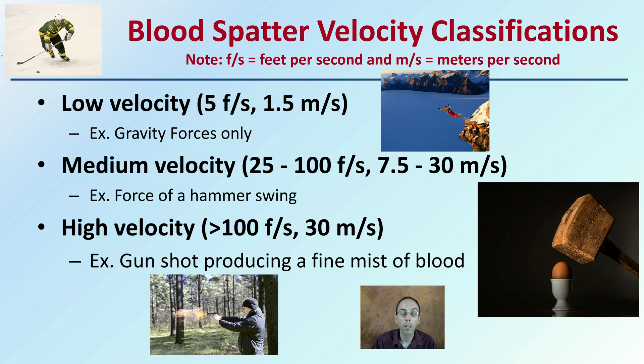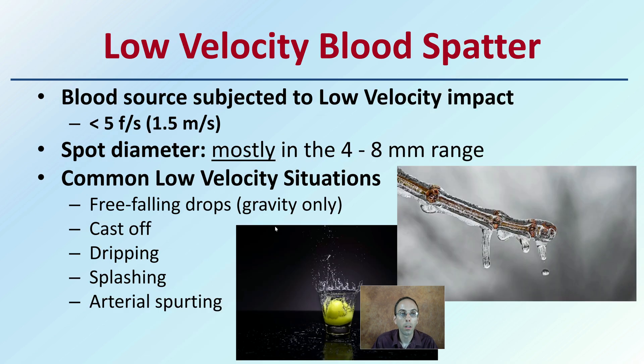Low velocity is classified mainly as gravity forces only. Medium velocity is like the force of a hammer swing, and high velocity would be a gunshot producing a fine mist of blood.